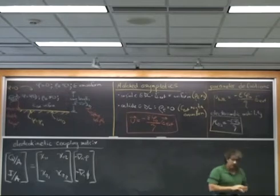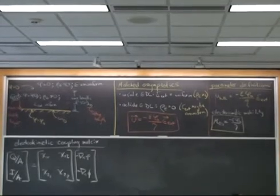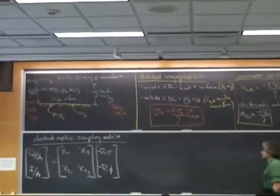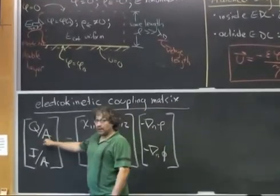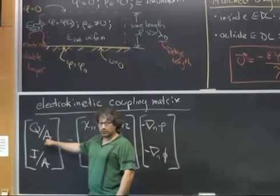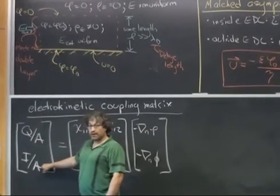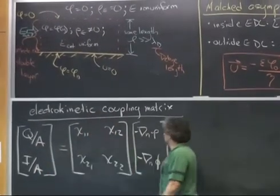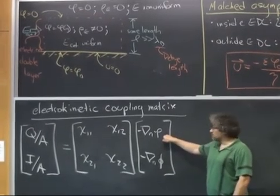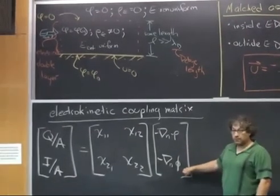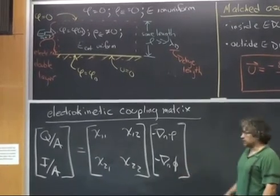I want to write the electrokinetic coupling matrix in this form. This is a 2 by 2 linear equation that relates in some channel the area averaged volumetric flux and the area averaged current to the pressure gradient in this channel and the electrical potential gradient in this channel.